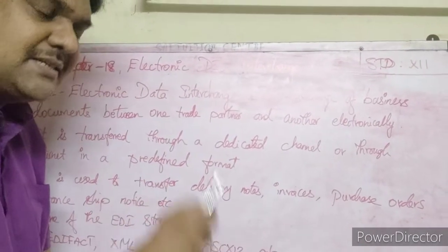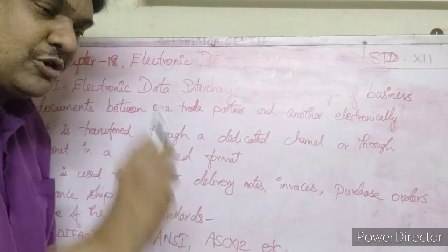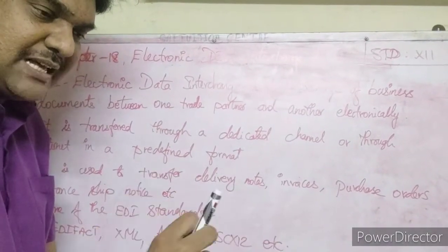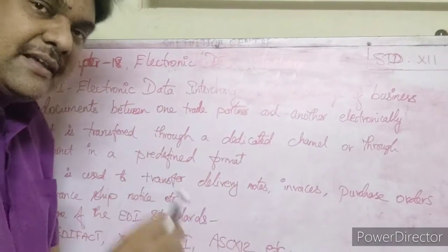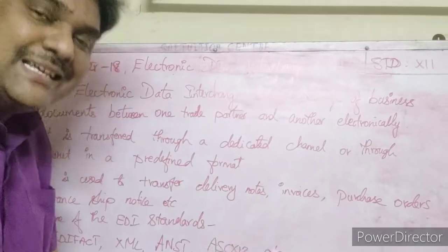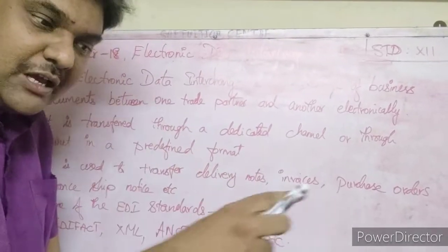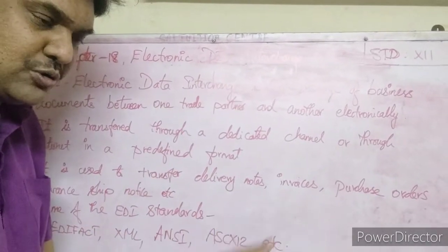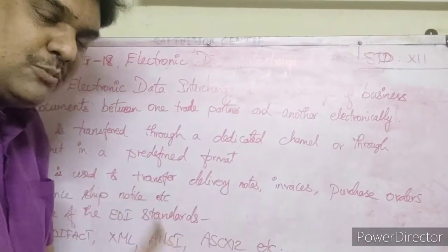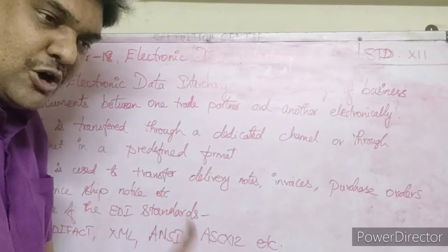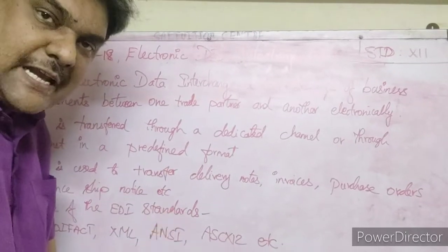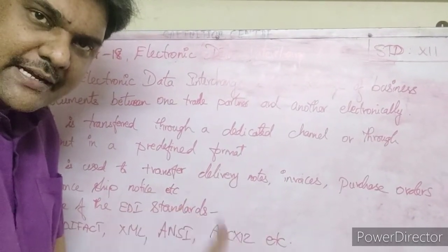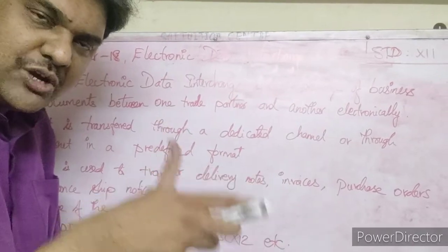EDI means Electronic Data Interchange, which is nothing but the exchange of business documents electronically — not through post or by hand. When computers are used to exchange business documents, it is called EDI, Electronic Data Interchange.